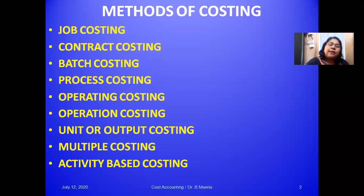The next method is unit or output costing. This method is applicable where output is uniform in all respects and production is continuous. Under this method, cost per unit is ascertained by dividing the total cost by the number of units produced. That is unit or output costing.